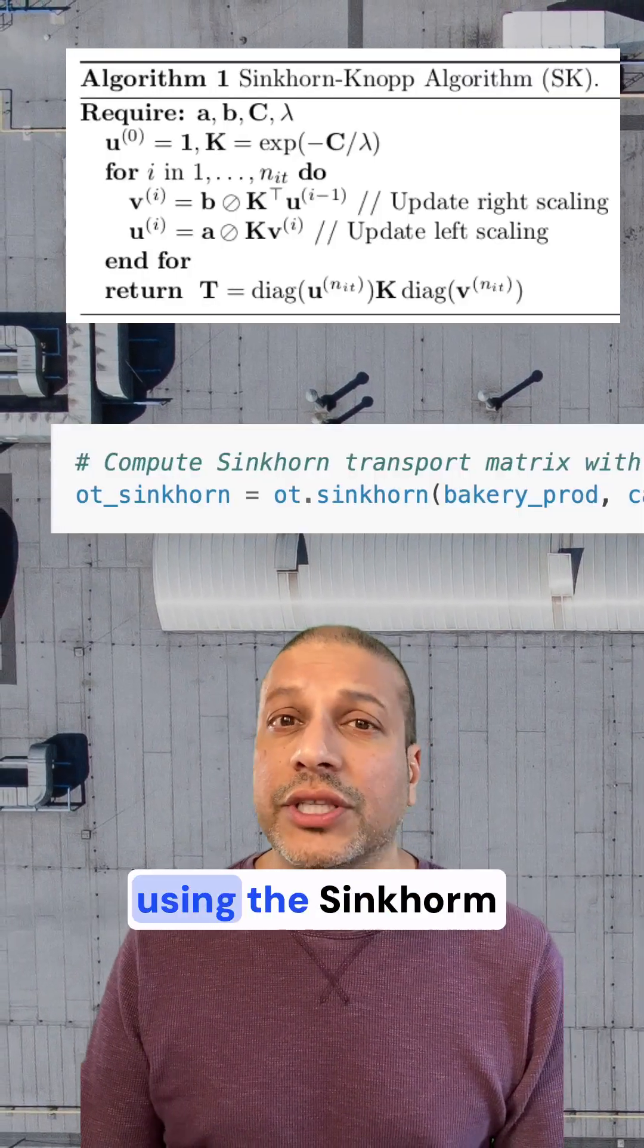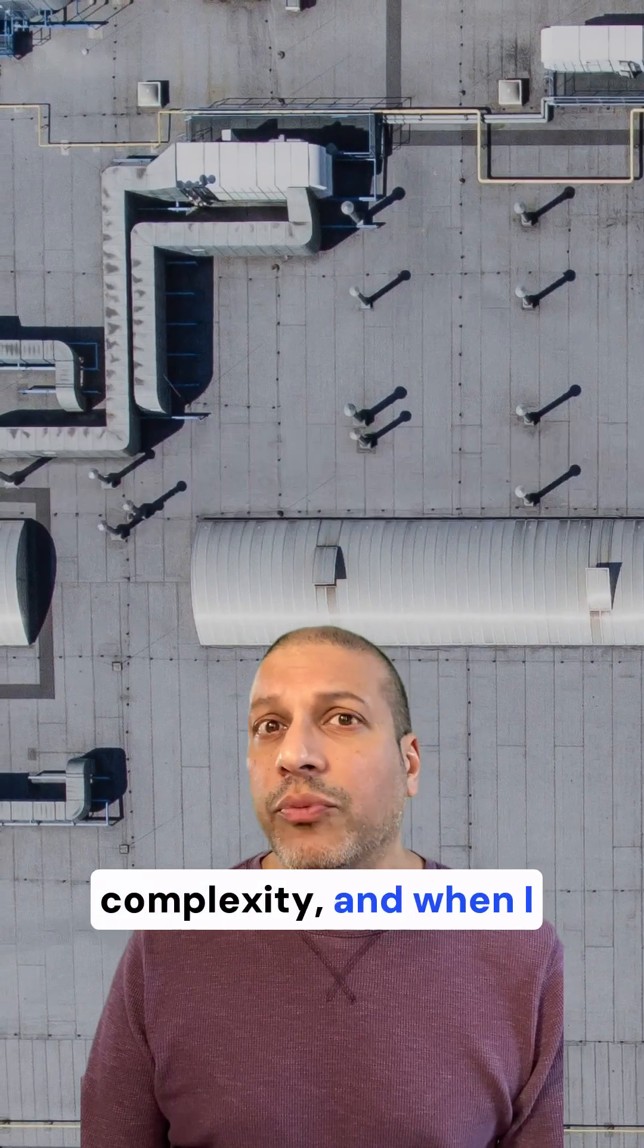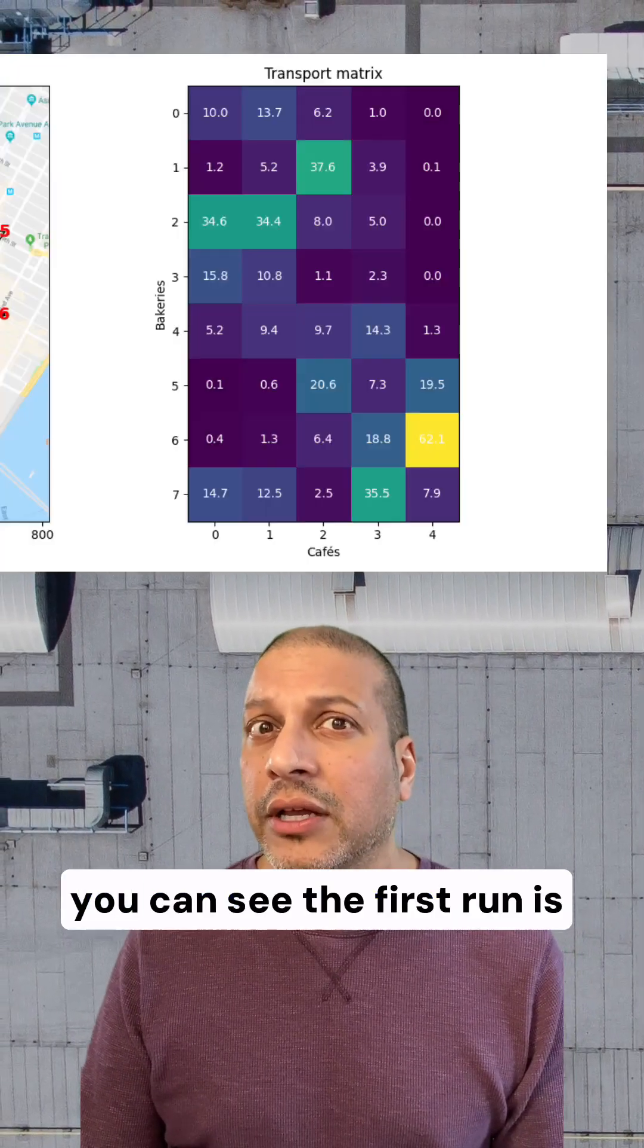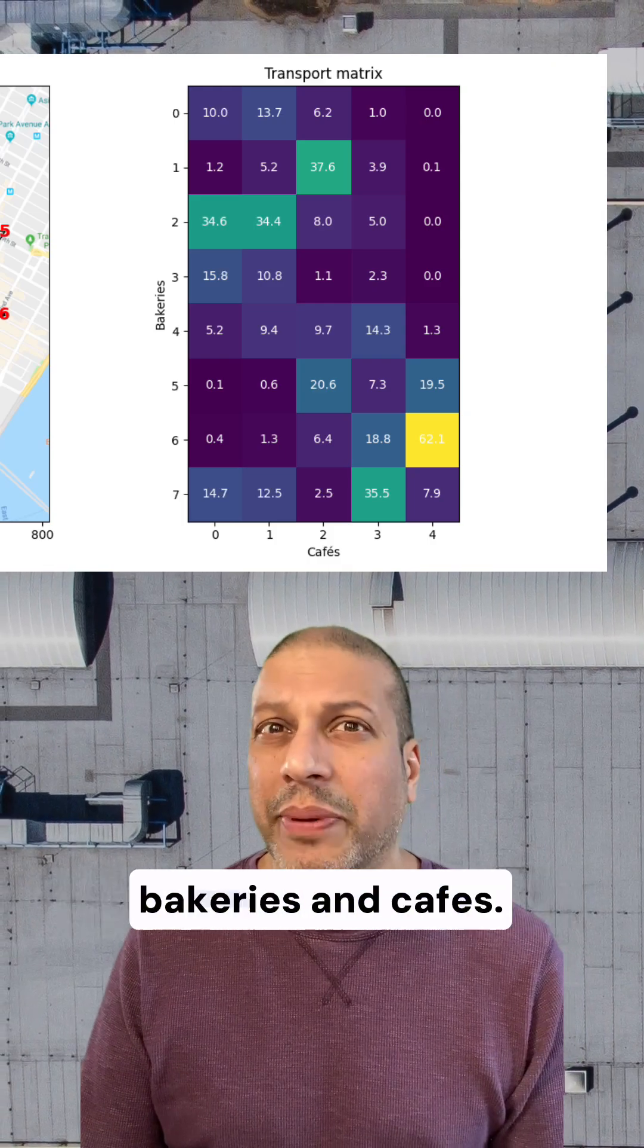An alternative to that is using the Sinkhorn algorithm. This has a lower complexity. And when I first run it here, you can see the first run is a little bit messy where I'm spreading the croissants across multiple bakeries and cafes.